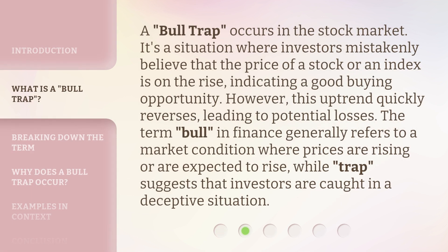A bull trap occurs in the stock market. It's a situation where investors mistakenly believe that the price of a stock or an index is on the rise, indicating a good buying opportunity. However, this uptrend quickly reverses, leading to potential losses. The term 'bull' in finance generally refers to a market condition where prices are rising or are expected to rise, while 'trap' suggests that investors are caught in a deceptive situation.